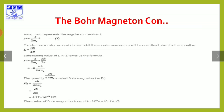We substitute the value of L into the equation. Substituting into the equation, μ = minus e divided by 2mₑ, times nℏ / 2π, which gives μ = eℏ / 4πmₑ. The quantity eℏ / 4πmₑ is called the Bohr magnetron, μB.